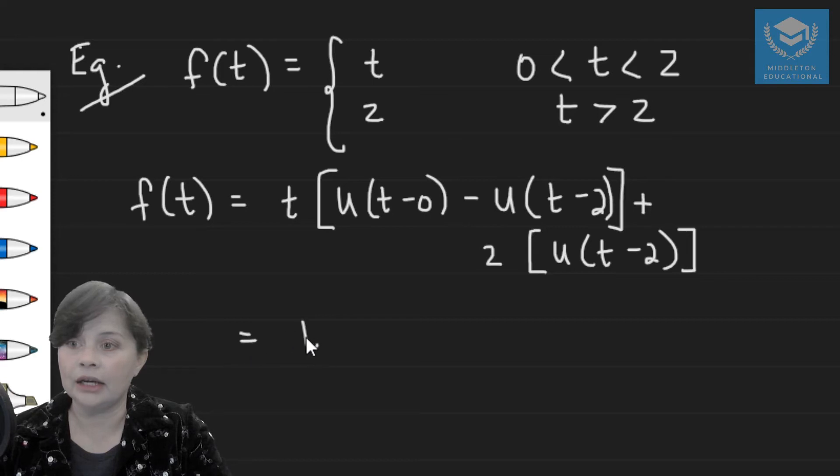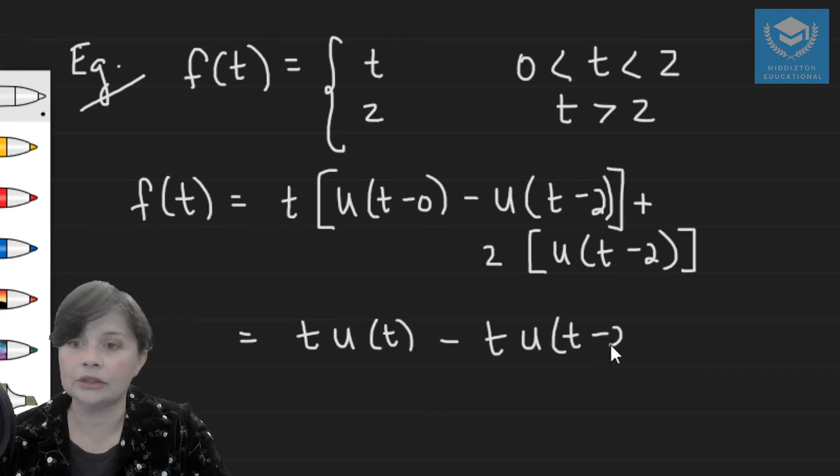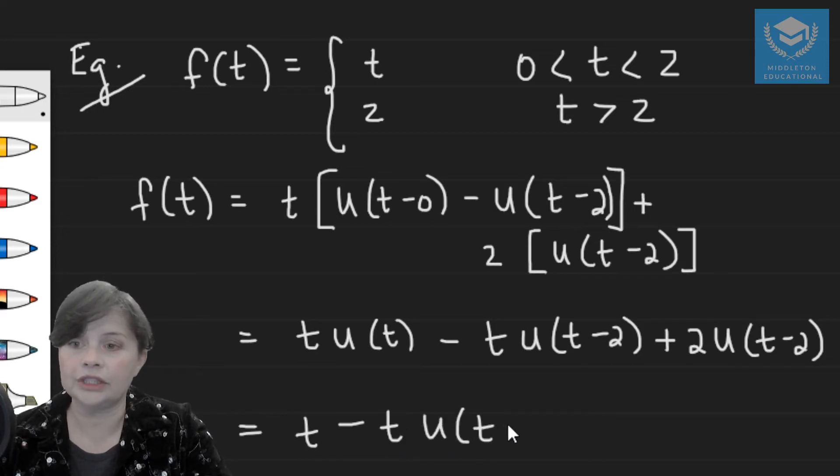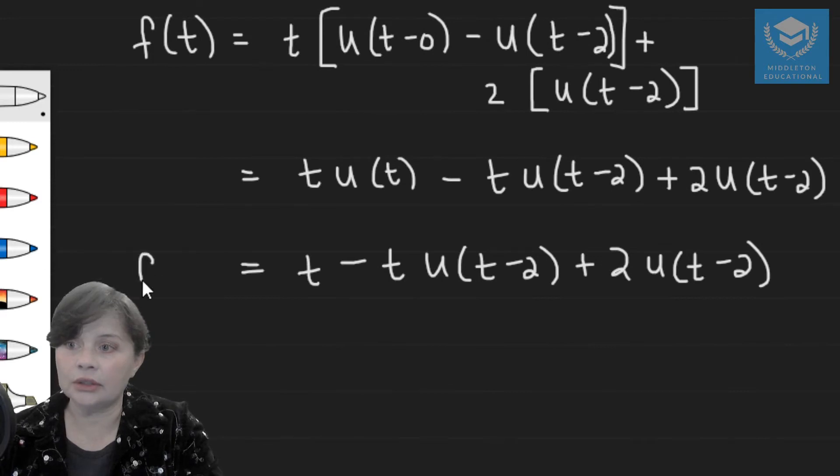So if I multiply out, I'm going to get tu(t) minus tu(t-2) plus 2u(t-2). Okay, your first term is just going to be t, and then minus u(t-2). So this is the function that we want to find the transform of.